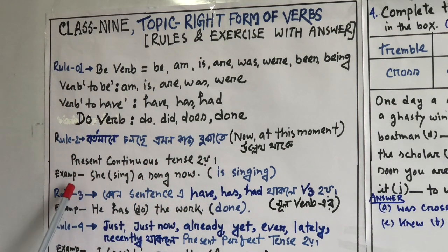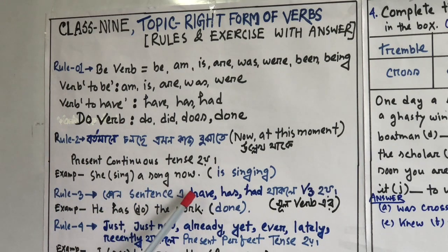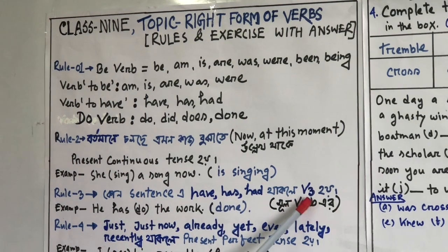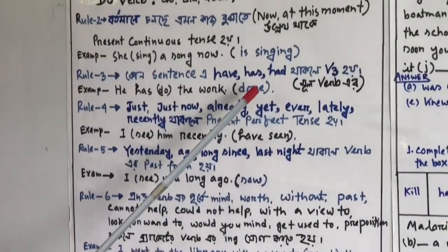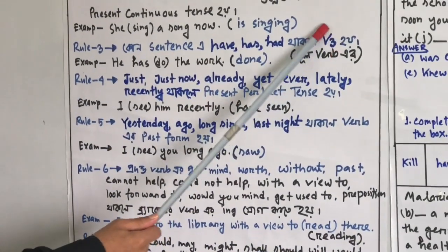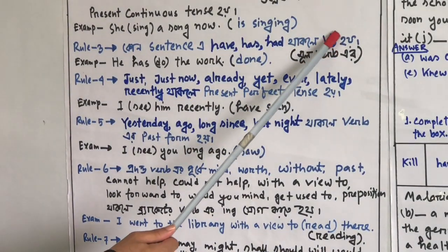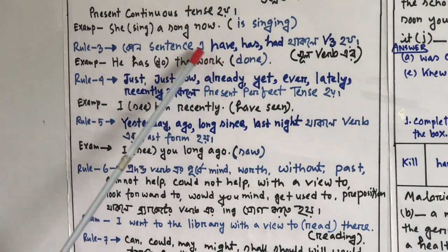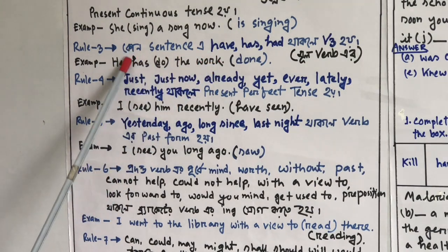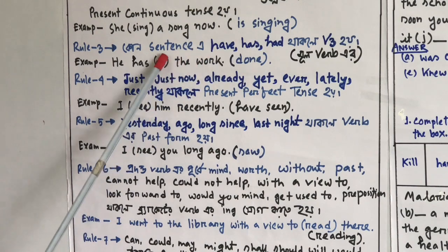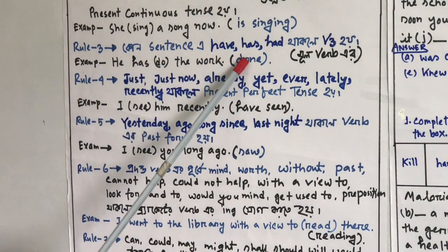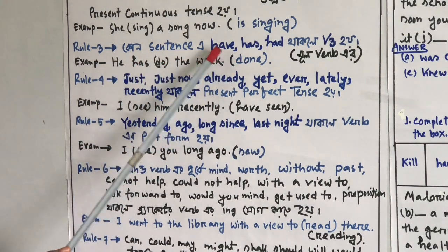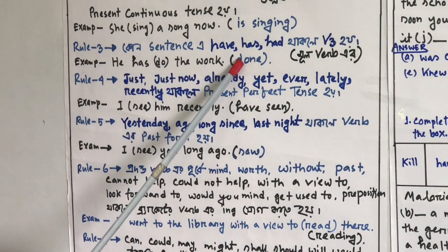Rule number 3 — when a sentence has 'have,' 'has,' or 'had,' the main verb that follows takes the past participle form. Example: 'He has done the work.' When you say 'has,' the verb becomes 'done' — that is the past participle form.